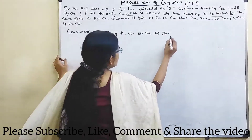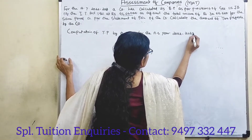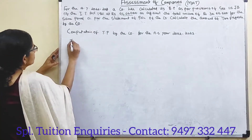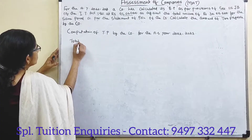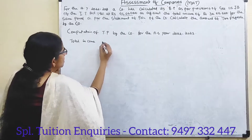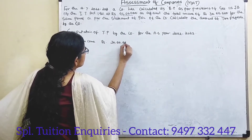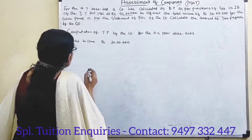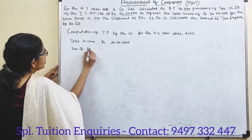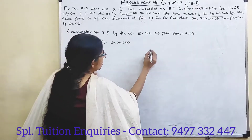For the assessment year 2022-23, the total income is Rs. 30 lakhs. Tax at the rate of 25% on 30 lakhs is Rs. 7 lakhs 50 thousand.